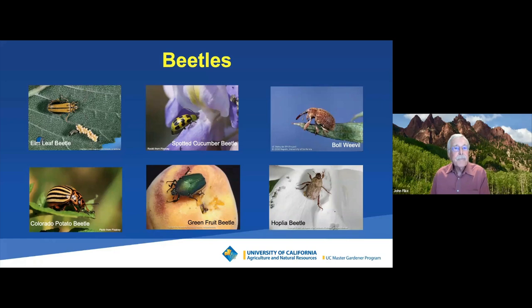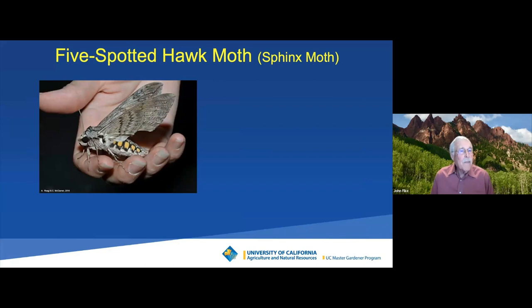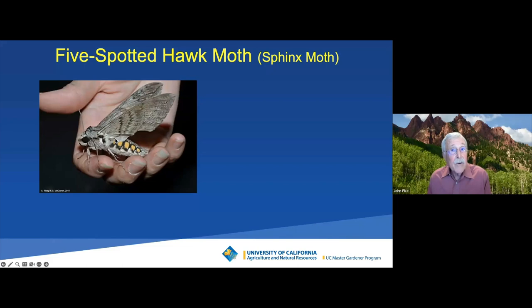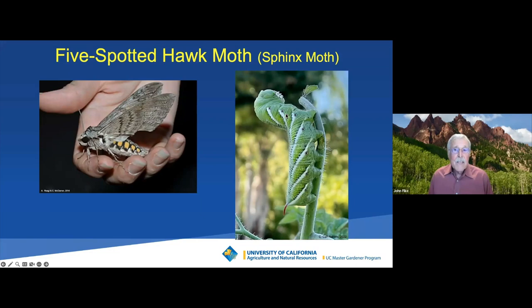Here is the five-spotted hawk moth — also called a sphinx moth. The moth is quite large and has a siphoning mouth part — it eats nectar from flowers and does no damage. But what she does is lay her eggs, and her larva comes out as the tobacco hornworm. If it had a black spine, it would be called a tomato hornworm — they're functionally the same. They are very damaging to your tomatoes and peppers — they eat the fruit, the leaves, the stems, and like to take a bite out of every tomato.